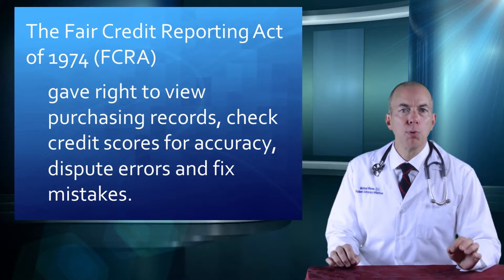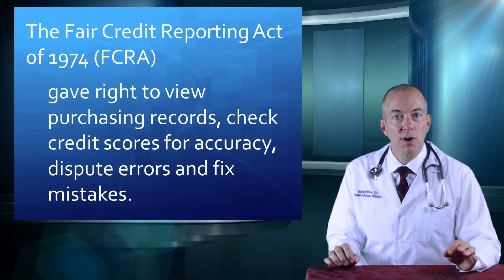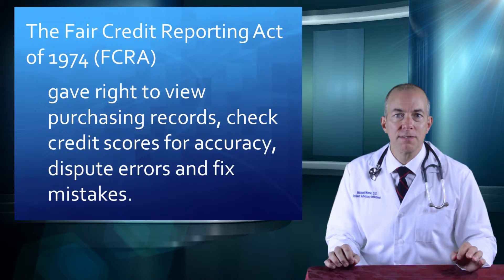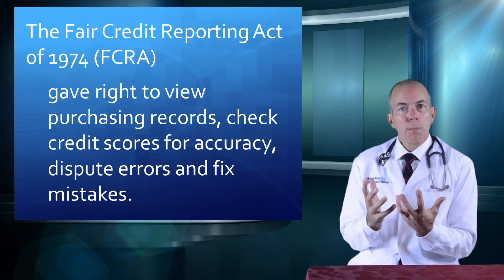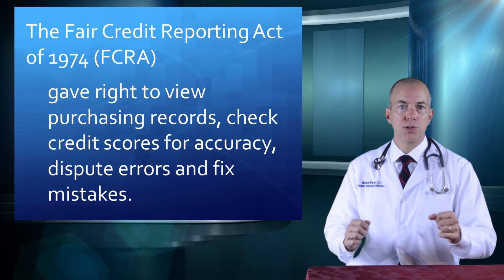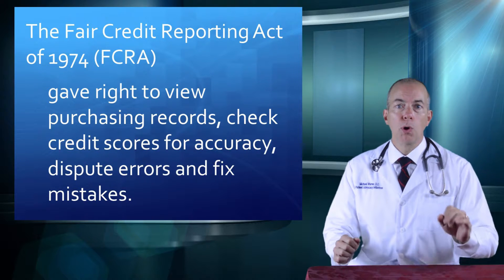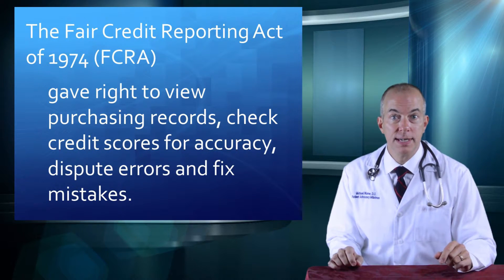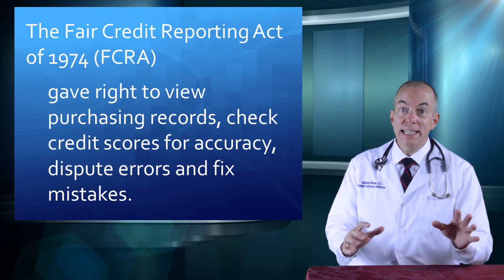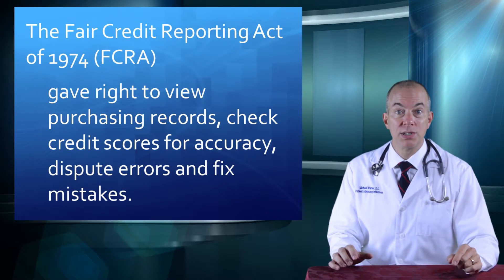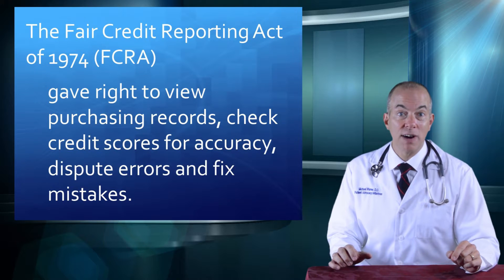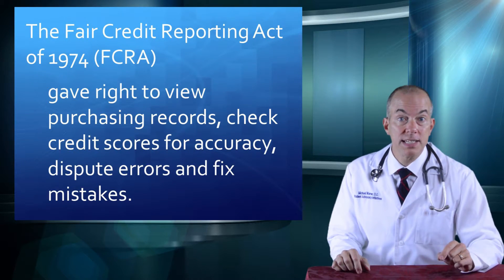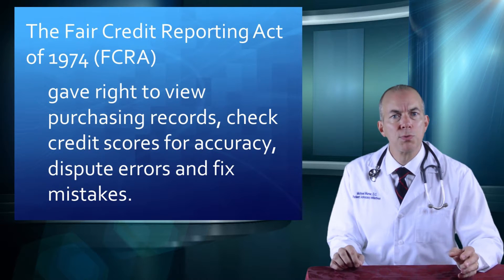The Fair Credit Report Act of 1974 gave each of us rights as consumers in the retail market. This act specified that we were allowed to view our purchasing records and our credit score for accuracy. We were also given the right to dispute any errors or misrepresentations. As a matter of fact, retailers were also required to accommodate a consumer's wish to access, transition records, and fix mistakes, or else face federal fines and sanctions.